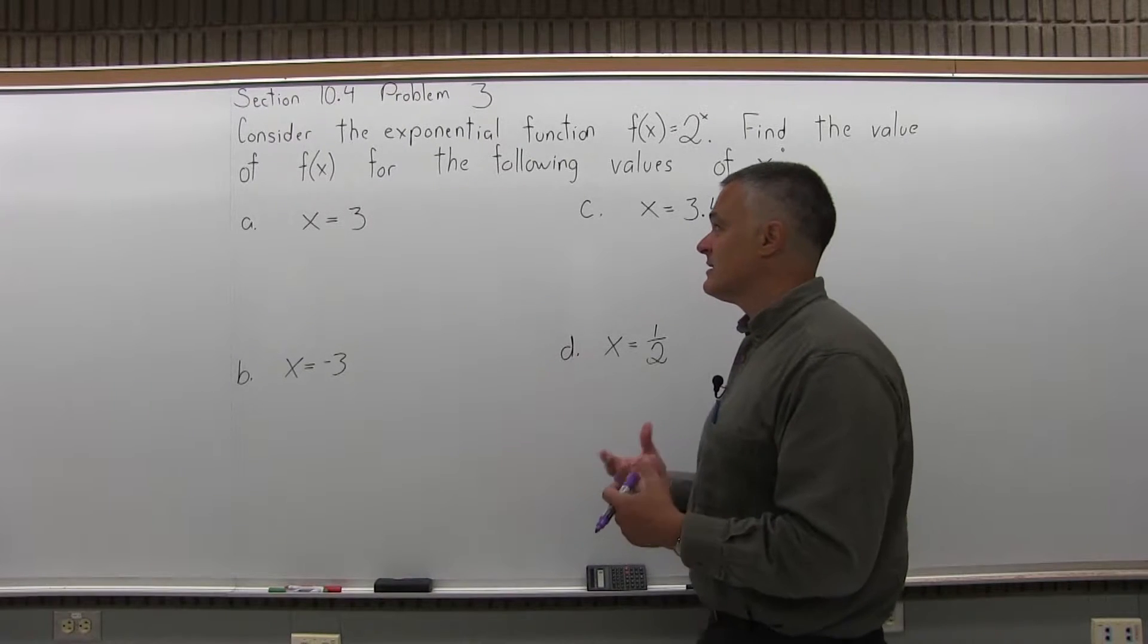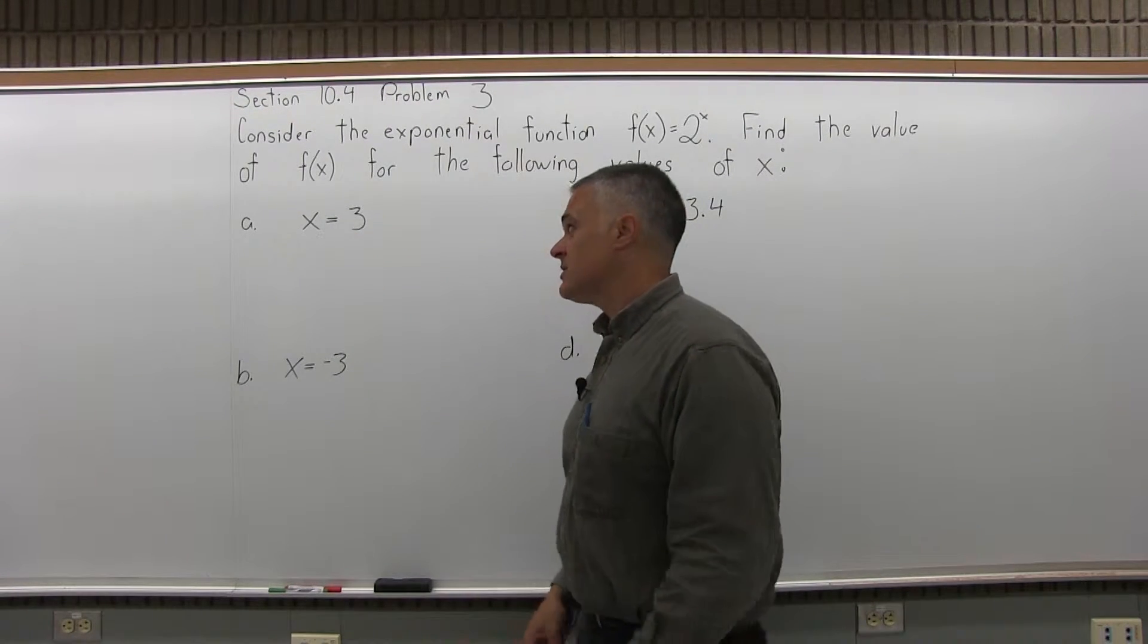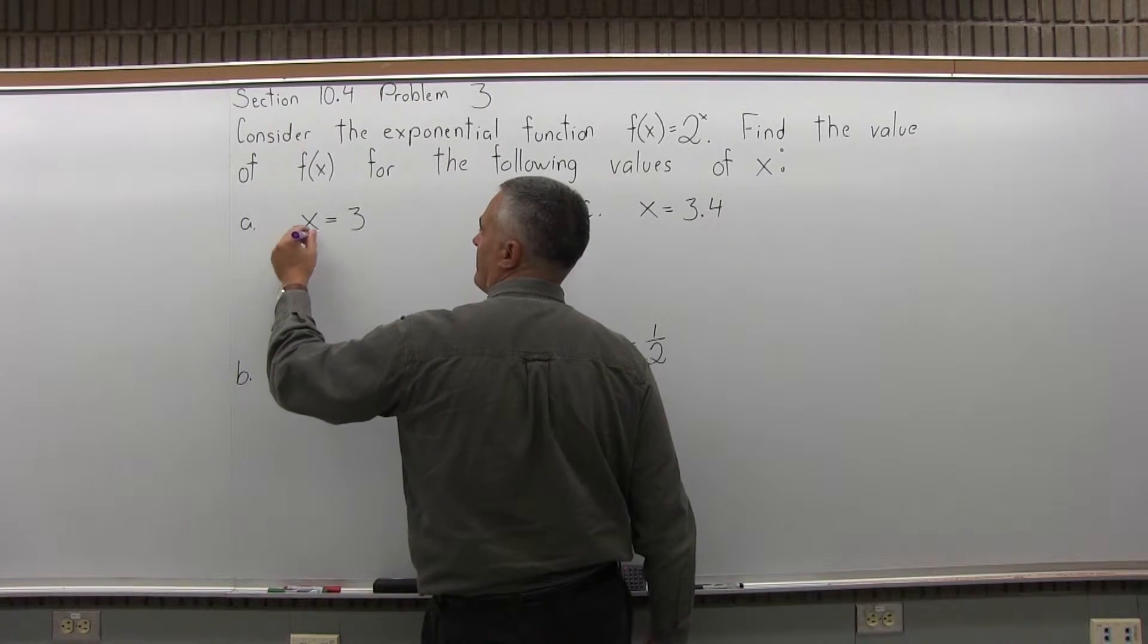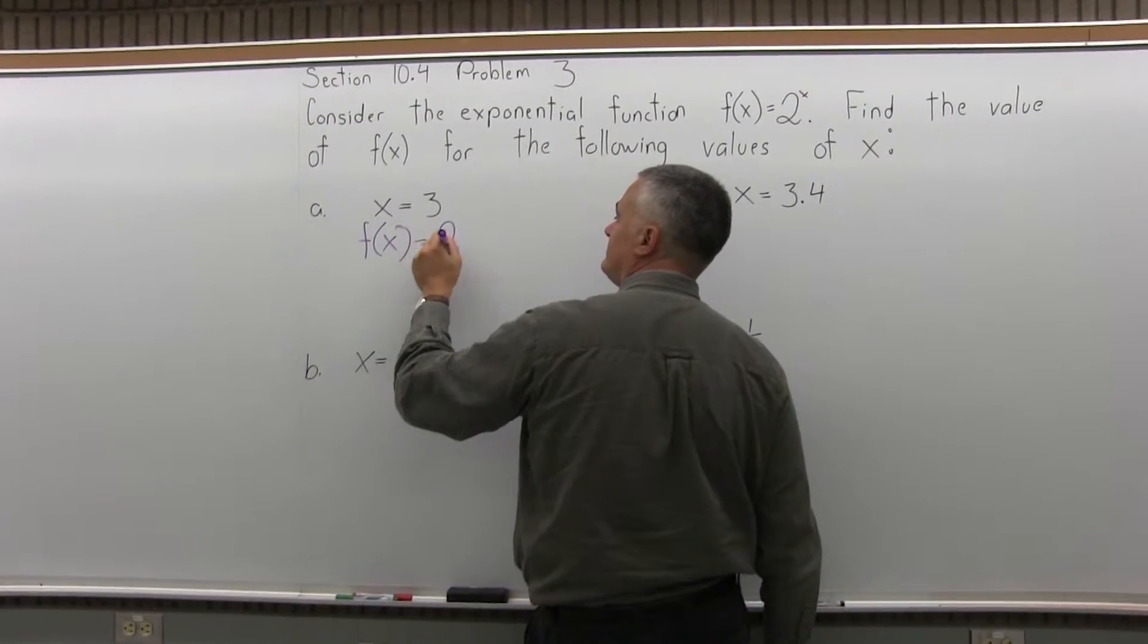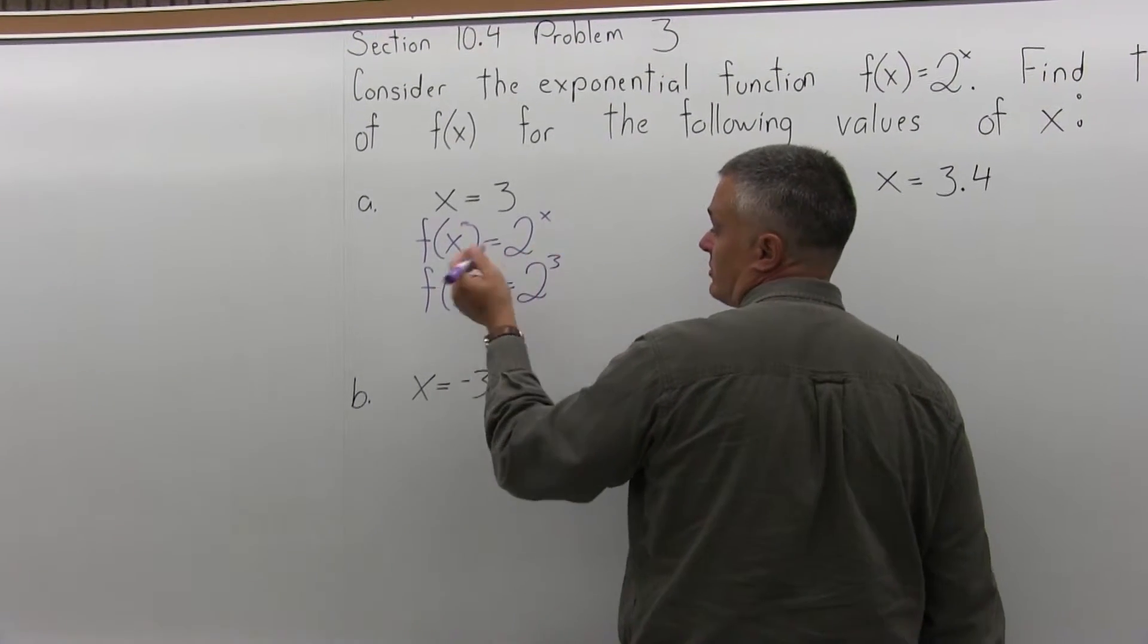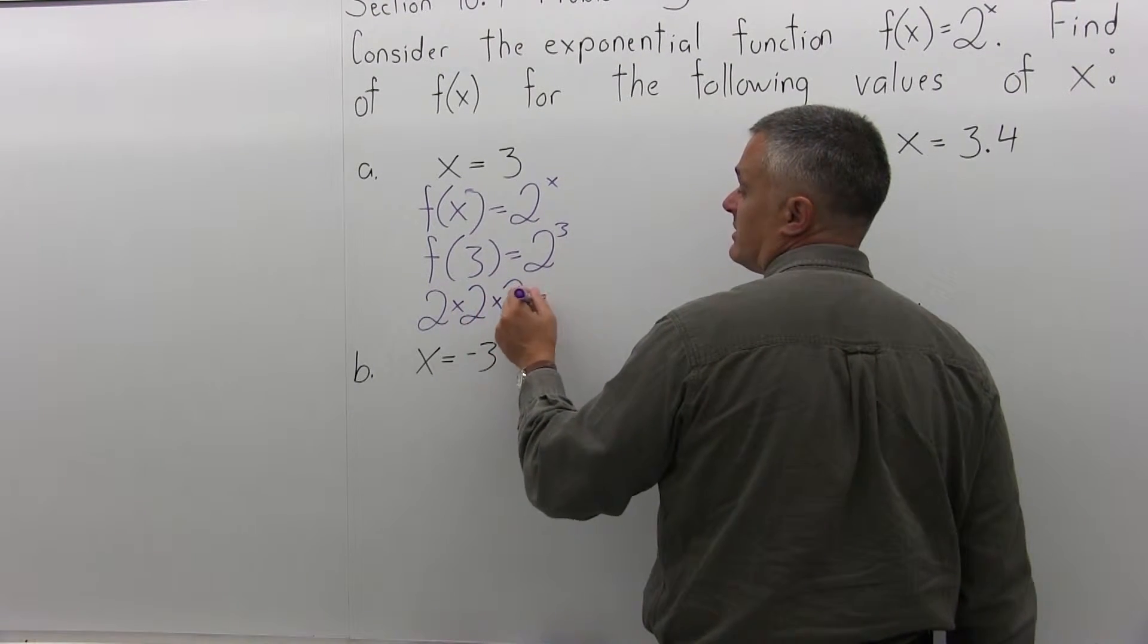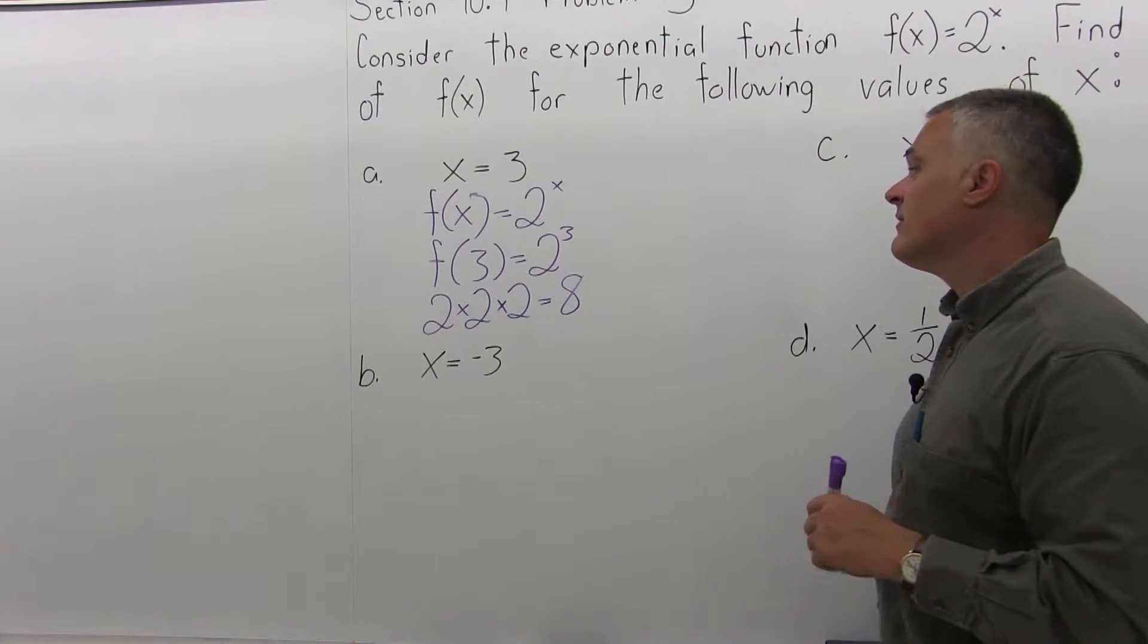There are four different values of x that they tell you to try. Part a is x equals 3. So what does f of x come out to if x equals 3? So f of x is 2 to the x power. And when x is 3, f of 3 makes 2 to the x, 2 to the third. So 2 times itself 3 times, 2 times 2 times 2, equals 8. So when x is 3, f of x is 8.